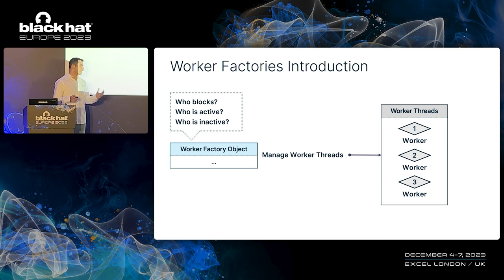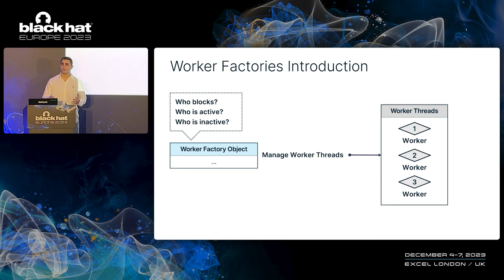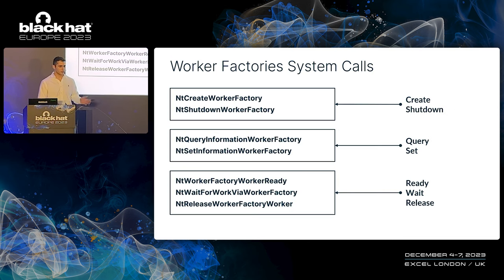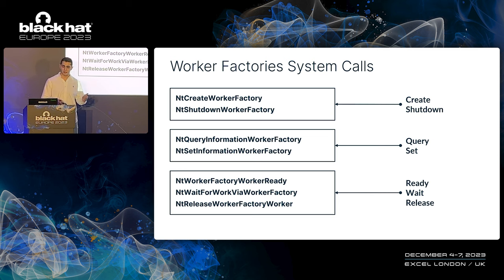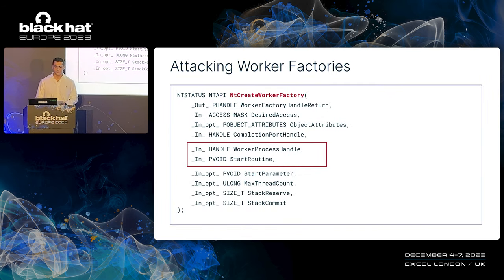The worker factory does not perform any scheduling or execution of work items on its own. Its only purpose is to make sure that the number of worker threads is sufficient. The kernel exposes few system calls to interact with worker factory objects, including a create and shutdown system call, query and set — which are basically getter and setter for the kernel object — and we have ready, wait, and release system calls.